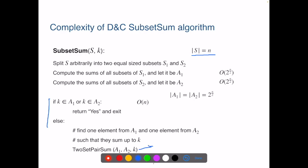Checking and seeing if k is in A1 or in A2 takes linear time. The two-set pair sum algorithm takes this much time. So this component has the highest computational complexity in this algorithm. So the overall complexity of the divide-and-conquer subset-sum algorithm is big O of n times 2 to the power of n over 2. Now you may wonder, wait, this is still exponential. How much an improvement did we get?